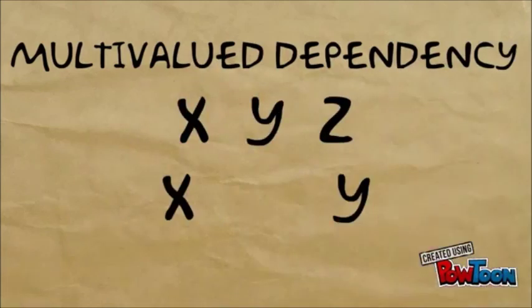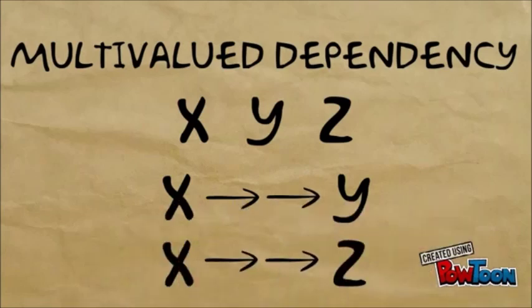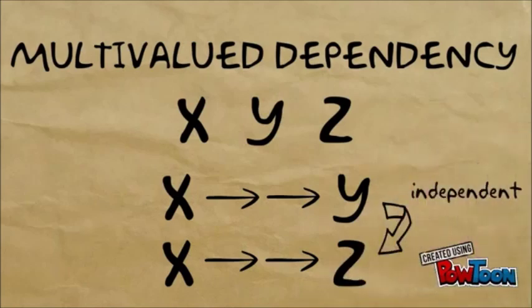A multivalued dependency is a type of dependency that exists when there are at least three attributes in the schema. For each value of X, there is a well-defined set of values for Y and a well-defined set of values for Z. But the set of values for Y is independent of Z.